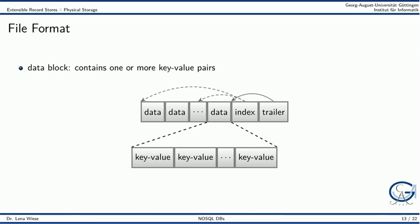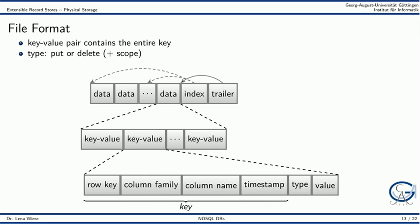Each data block contains one or more key value pairs. Each key value pair contains the entire full key, that is, the row, column family, column name and timestamp. The key is followed by the type, either put or delete. And lastly, the column value follows. Note that in a data file, column family and column name can appear very often. The recommendation is hence to keep them very short.